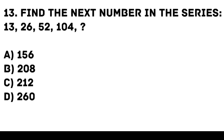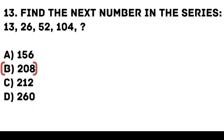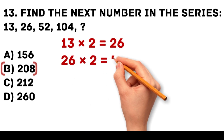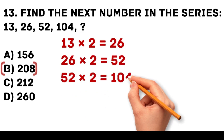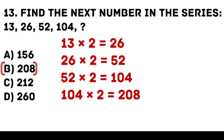Answer: B. 208. Each number in the series is multiplied by 2. 13 times 2 is equal to 26. 26 times 2 is equal to 52. 52 times 2 is equal to 104. 104 times 2 is equal to 208.